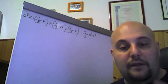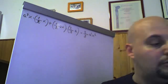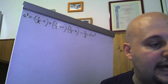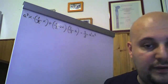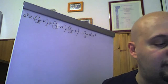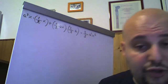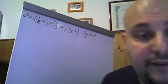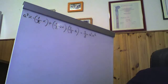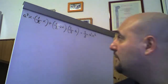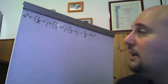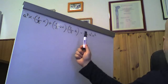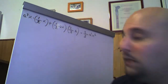Per chi stesse frequentando il liceo e avesse un libro di nome Algebra Blu, edito Zanichelli e di autori Bergamini, Trifone e Barozzi, sappiate che traggo gli esercizi di questo video unicamente da questo libro. Gli esercizi si trovano a pagina 330/331. Cominciamo dal primo, che è il numero 129: a² × (1/2 x) + (1/2 ax) × (2/3 a) − 2/3 a²x².